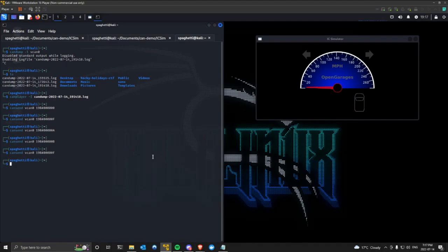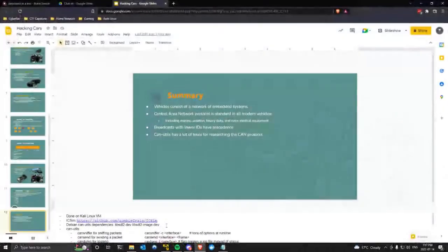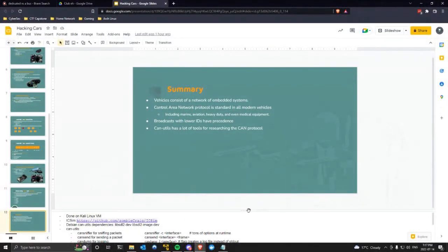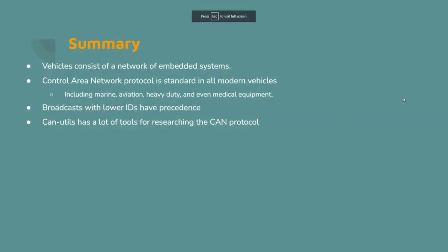In summary: vehicles consist of a network of embedded systems. We learned about one of the protocols standard in all modern vehicles — the Controller Area Network (CAN) protocol. In consumer vehicles many commands are proprietary to the manufacturer, but in marine, aviation, heavy-duty, and medical equipment the commands are standardized. Broadcasts with lower IDs have higher precedence. can-utils is a Linux package that can send, sniff, and log CAN data.